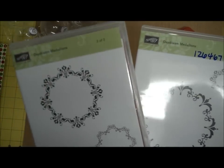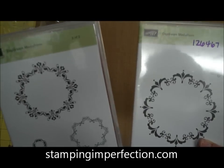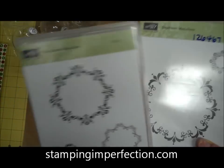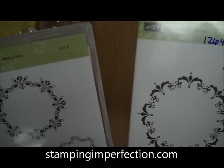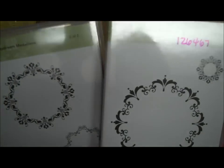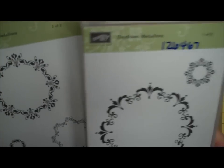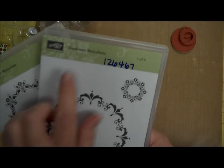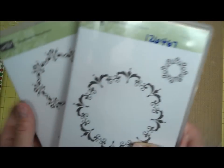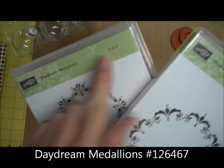Hi, Kim here from stampingimperfection.com. I'm here with a really quick tip on stamp storage. Some of our stamp sets come in a package of two, like the Daydream Medallions, for example. This is box 1 of 2, and then you get box 2 of 2.